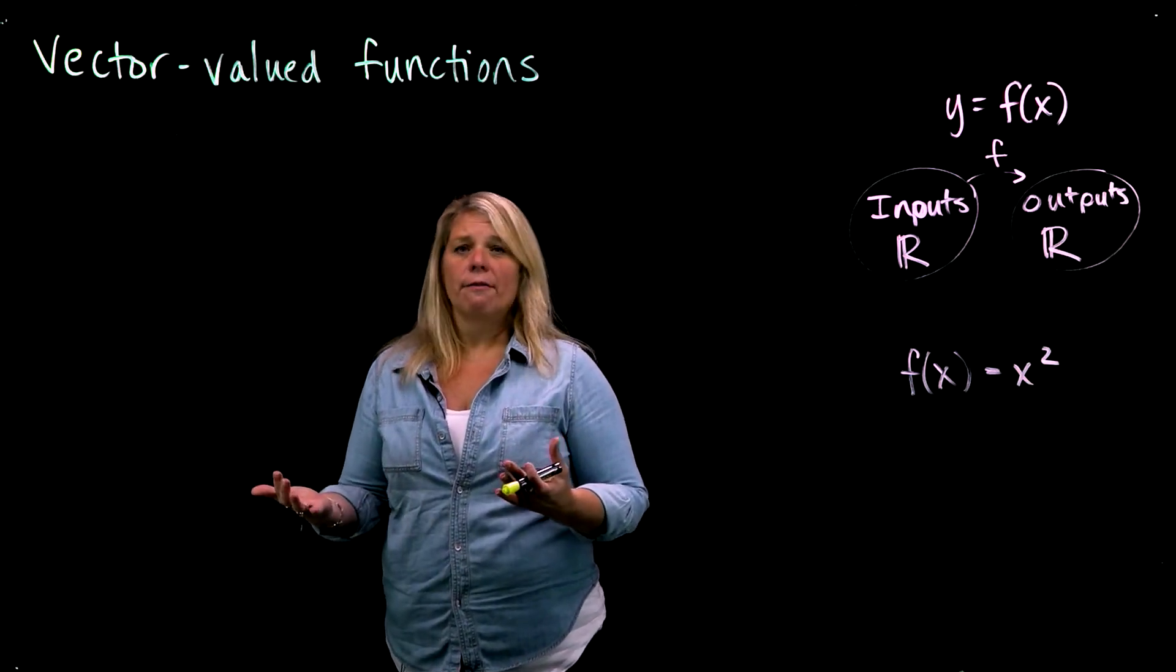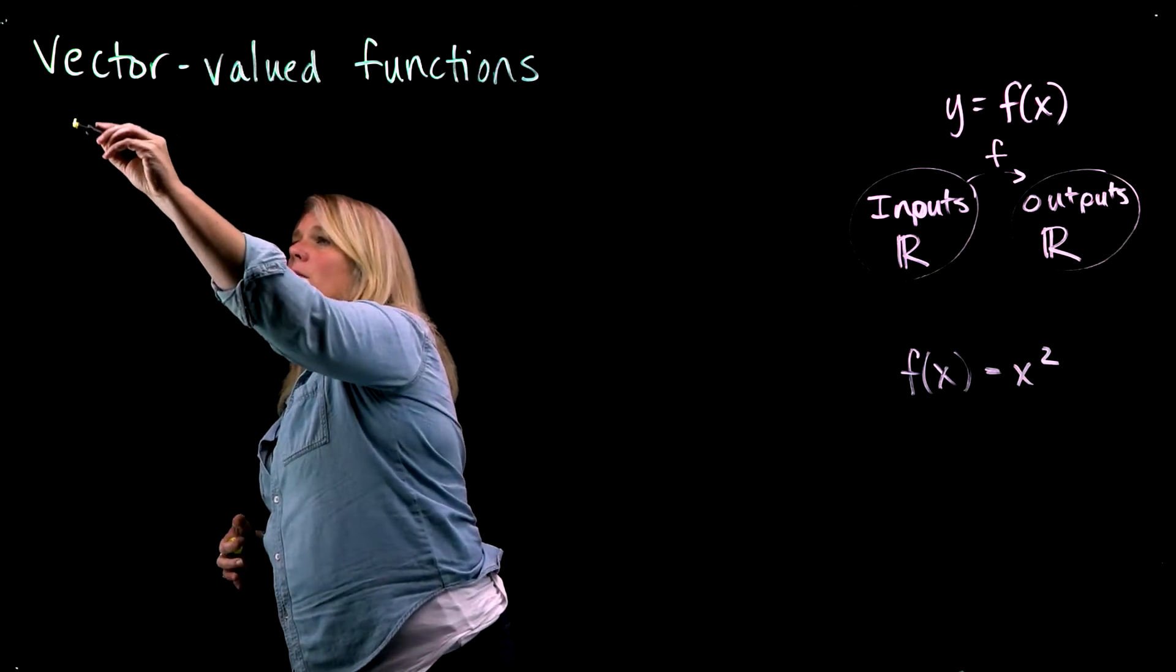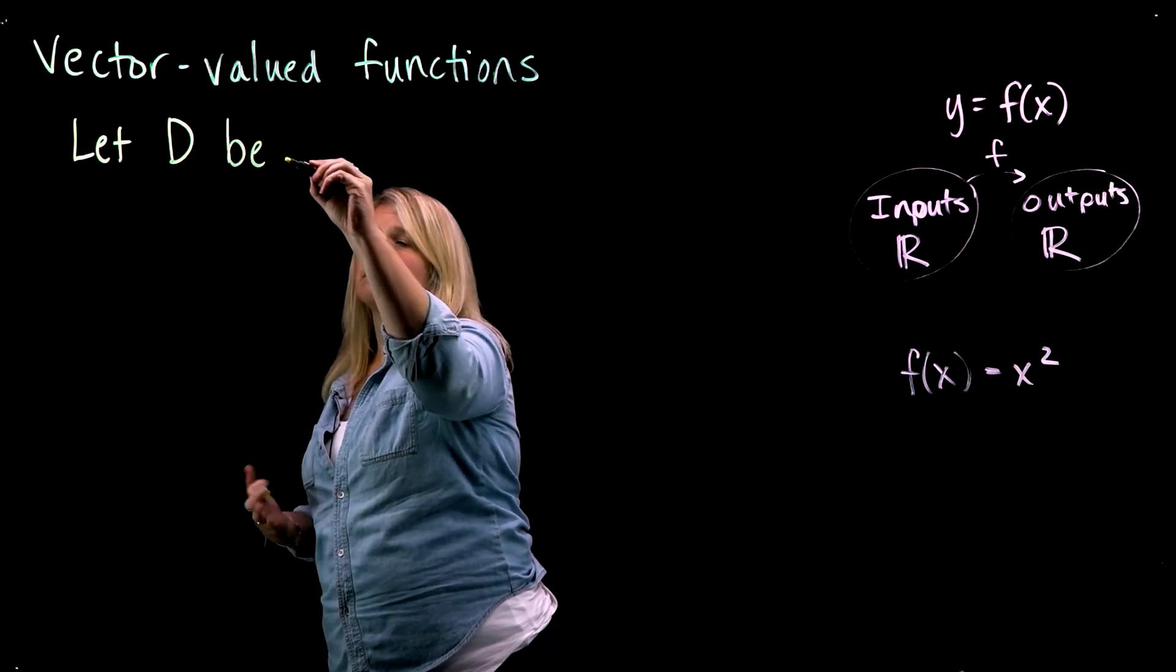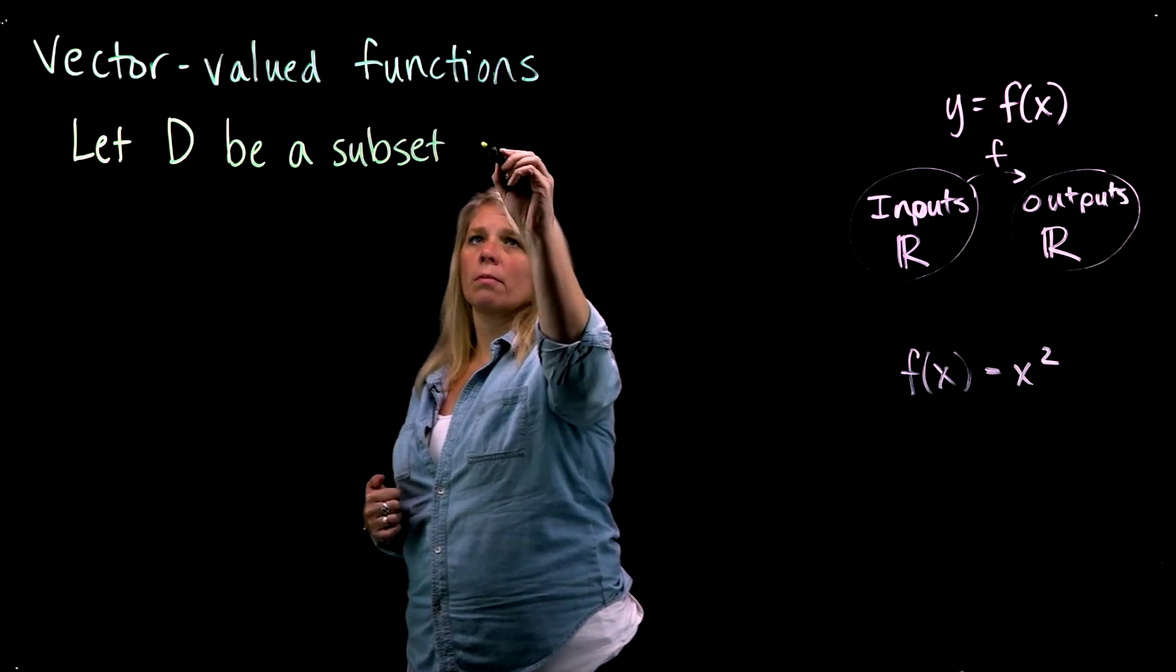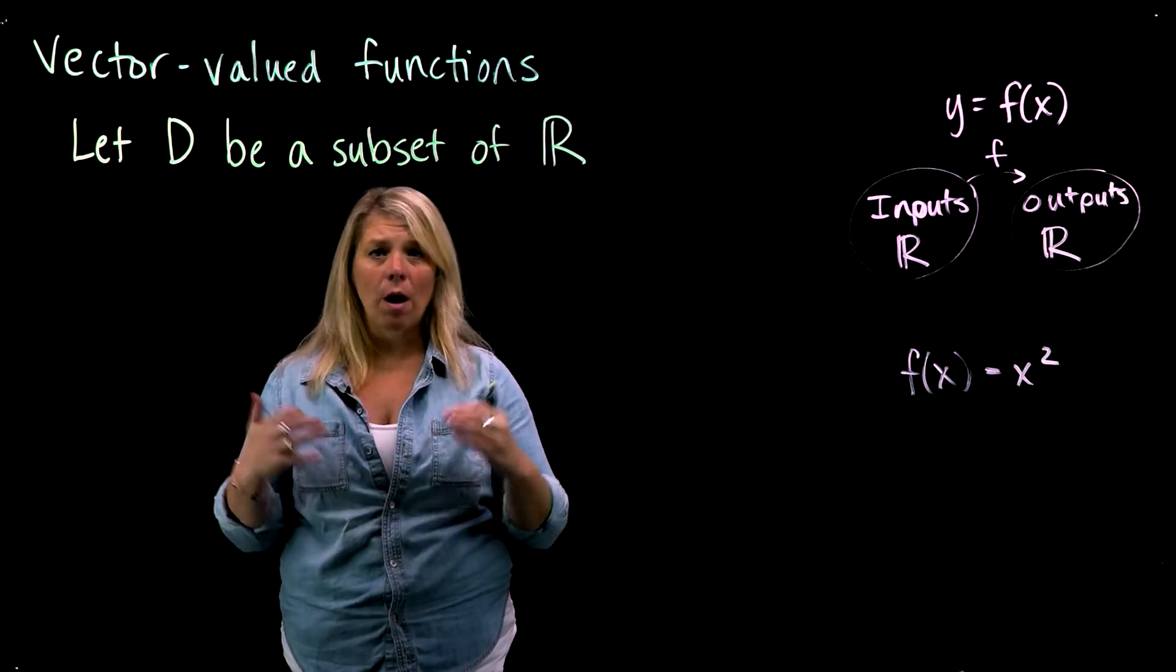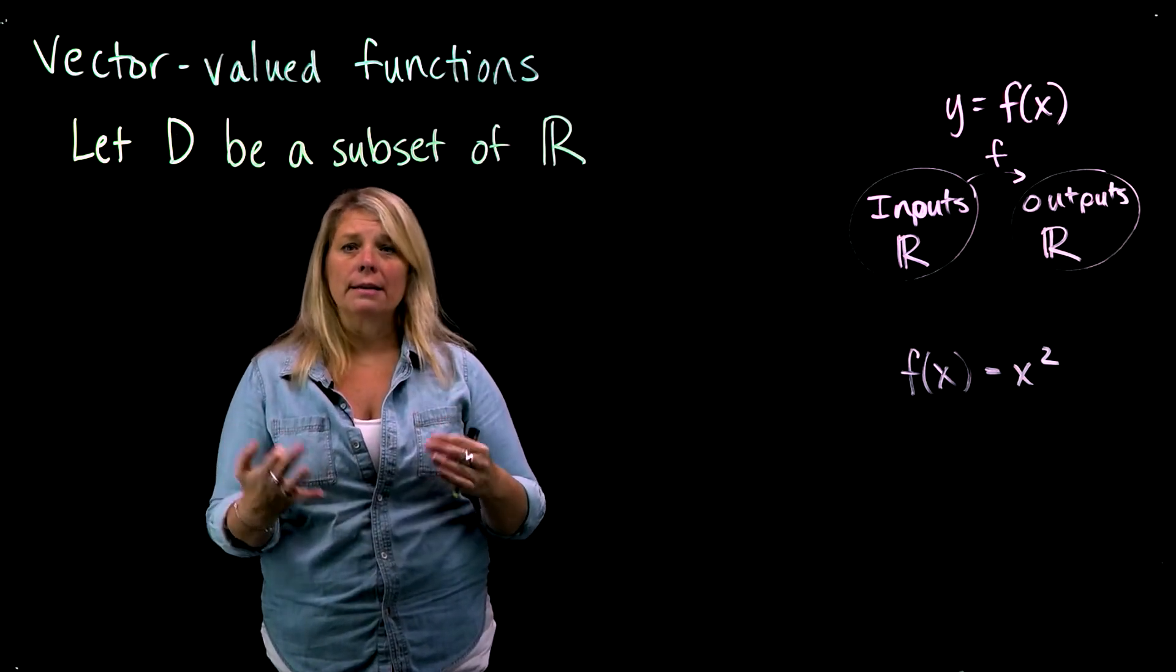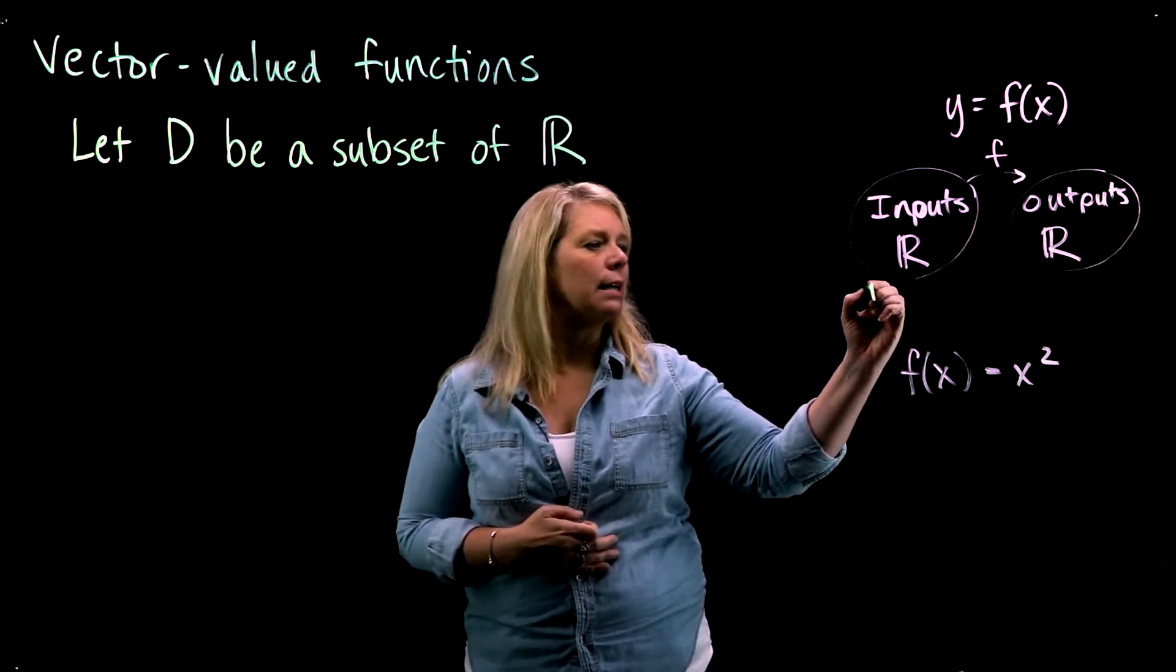Anytime we start with any kind of function, we want to talk about what are the things that go into that function, the inputs. Let D be some subset of the real numbers. It could be the entire set of real numbers. We've used this symbol to represent the set of real numbers when we talk about R1, R2, R3, Rn. In this case, D is a subset of ℝ. That might mean that D is all of ℝ. Any set is a subset of itself. I use D here because we're thinking about the idea of a domain.